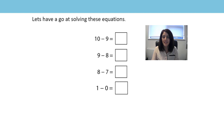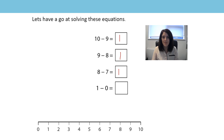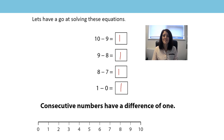Ten subtract nine: I notice that nine is one less than ten. Nine subtract eight: eight is one less than nine, so there's one left over. Eight subtract seven: seven is one less than eight, so there's one left over. And one subtract zero: one and zero are consecutive numbers, and zero is one less than one — have a look at your number line to check. We've all got ones as our answers because consecutive numbers have a difference of one.